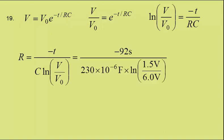Putting in all the values given, this gives an answer of 2.9 times 10 to the 5 ohms, which is answer B, 300 kilo-ohms.